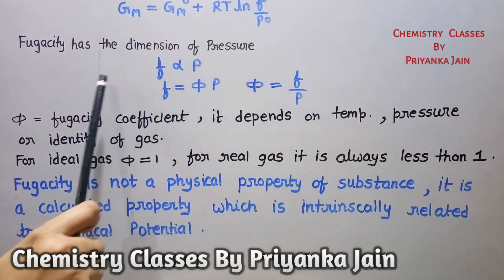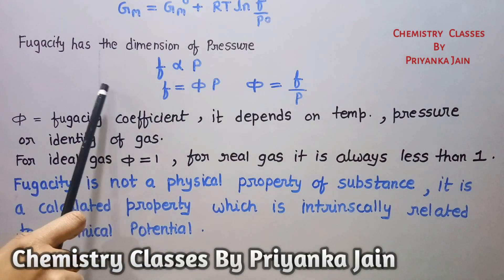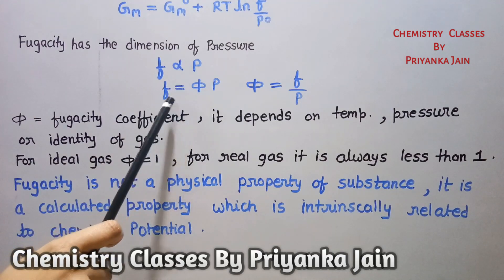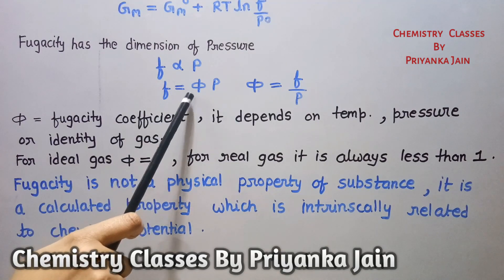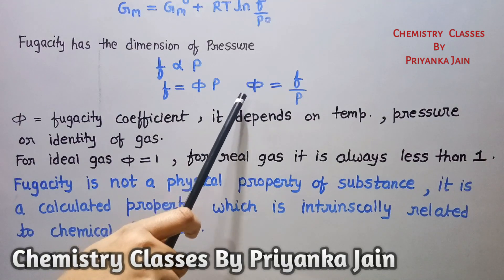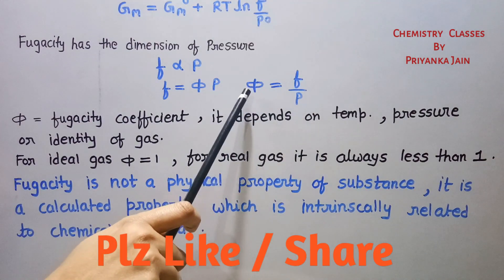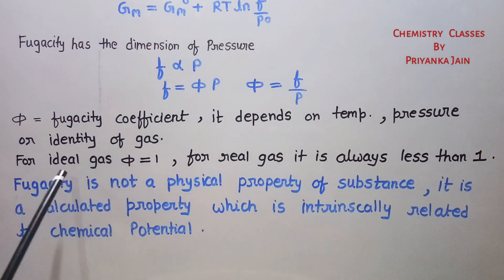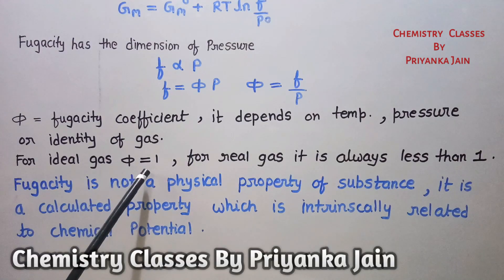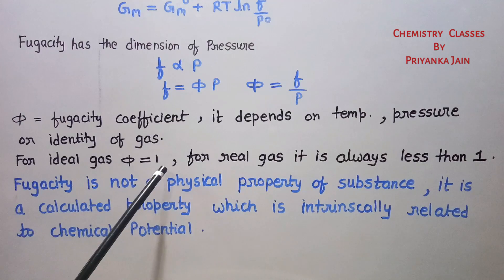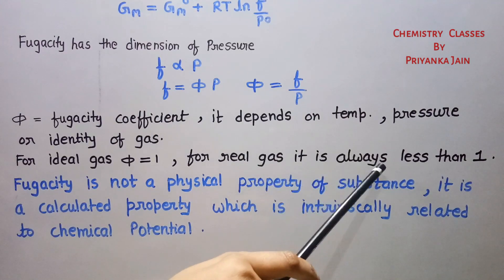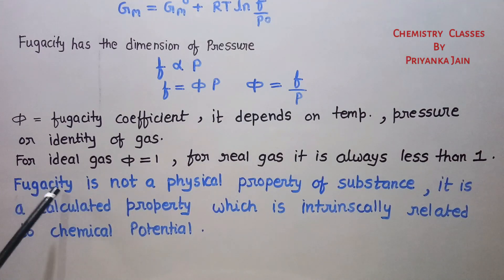Fugacity has the dimensions of pressure. Comparing the two equations, we find that fugacity is directly proportional to pressure, and we can write f = φp, where φ is the fugacity coefficient, defined as φ = f / p. The fugacity coefficient depends on temperature, pressure, and the identity of the gas. For ideal gases, φ = 1, so fugacity equals pressure — the effective pressure is the same as the real pressure. For real gases, the fugacity coefficient is always less than 1.